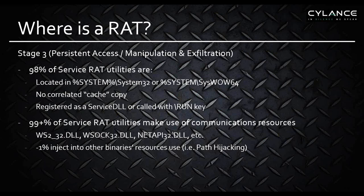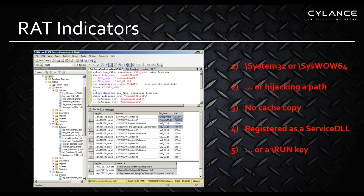More than 99% of the service RAT utilities — the backdoor Trojans — make use of communication resources: the API calls through W2, WS2_32, the Winsocket itself, NetAPI32, WinHTTP DLL, and so on. But we are seeing a reemergence of path hijacking by some malicious DLLs that will borrow the API calls from other services.